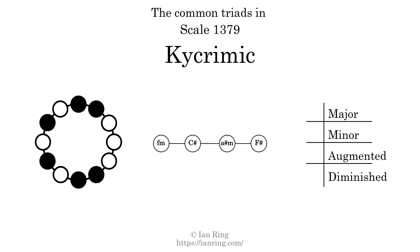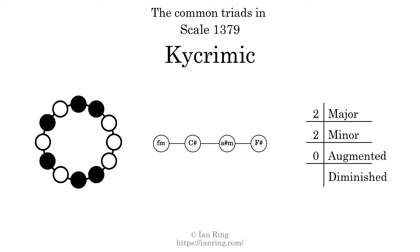Here are the common triads present in this scale. The diagram in the center is a graph of parsimonious voice leading between triads. There are two major triads. There are two minor triads. There are no augmented triads. There are no diminished triads. Here is a Hamiltonian path of parsimonious voice leading that uses all the triads.